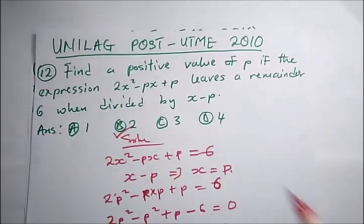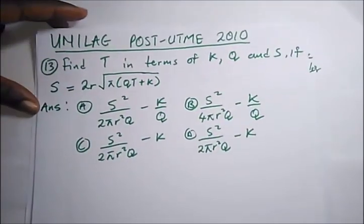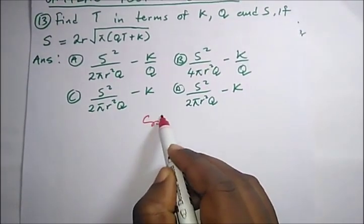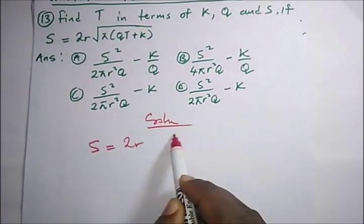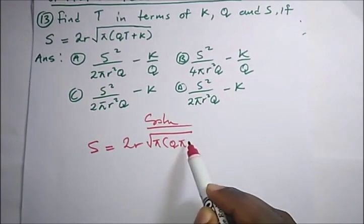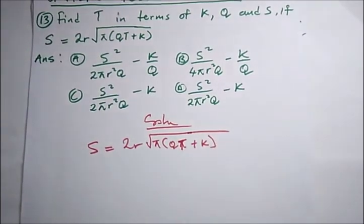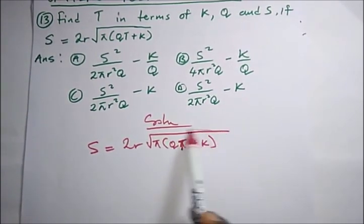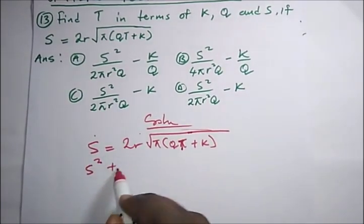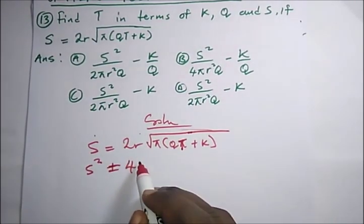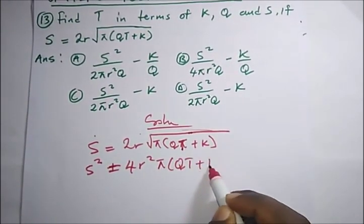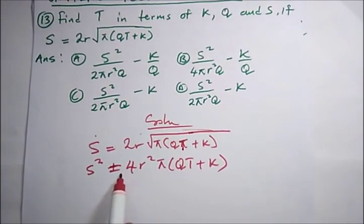The next question says: find t in terms of k, q, and s, given s equals a formula involving a square root. This is a change of subject of the formula. We need to isolate t. First, to remove the square root, we square both sides: s² = 4r²π(qt + k).